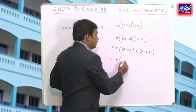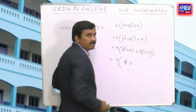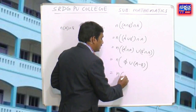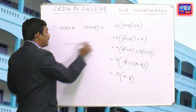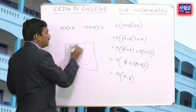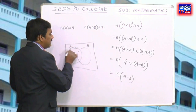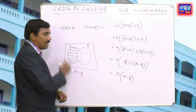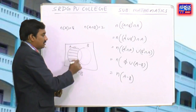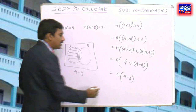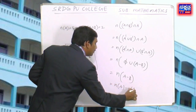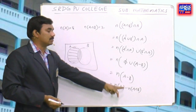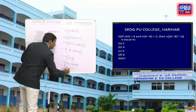So the result simplifies to B' ∩ A, which we can also write as A minus B. From the Venn diagram, A minus B represents 'A only'. To find n(A minus B): n(A) minus n(A∩B) = 8 minus 2 = 6. The final answer is 6.